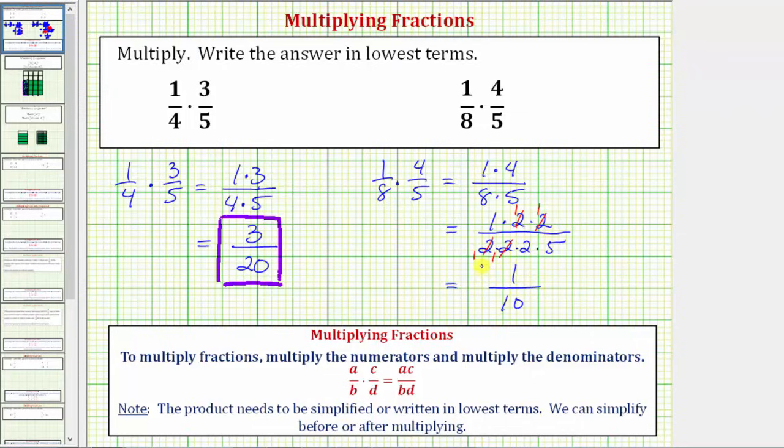Now there are several ways to show the simplifying. Here I showed it using prime factors. A lot of times you'll see the simplifying in this form here, where if we recognize there's a common factor of 4 between 4 and 8, and there's 1 four in 4, and 2 fours in 8, we can simplify the 4 to a 1, and the 8 to a 2.